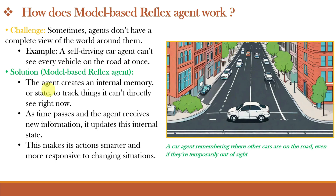First, the agent receives input from its environment, like the position of nearby cars or changes in traffic lights. It then updates its internal state based on the model of how the world works. This model includes rules like: if the light is red, vehicles are likely to stop; or if a car was in the left lane, it's probably still nearby even if I can't see it. For example, a car not currently visible to the agent still has its state — such as location or speed — stored in the agent's memory. The agent combines this new information with what it already knows, forming a best guess about the current state of all vehicles. It then selects the most appropriate action, like slowing down if it detects a possible obstacle. This allows the agent to respond to complex scenarios without needing full visibility, making it suitable for partially observable environments.